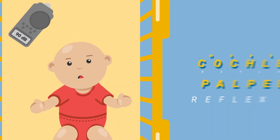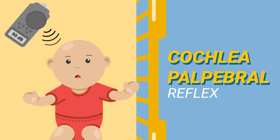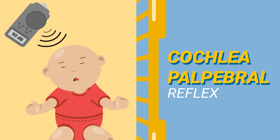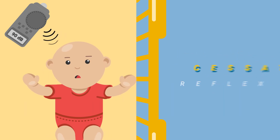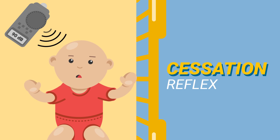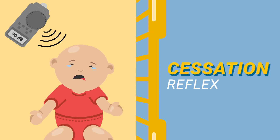In the cochleopalpebral reflex, the child responds by a blink to a loud sound. In the sucking reflex, an infant stops activity or starts crying in response to a sound of 90 decibels.